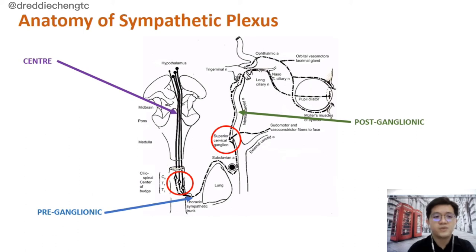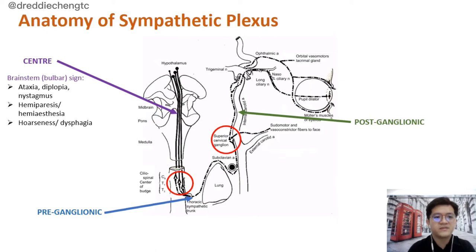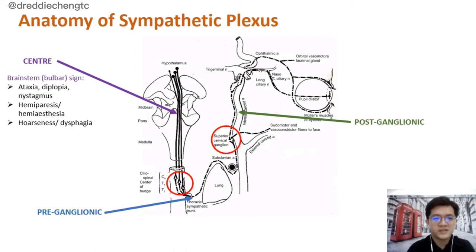In patients with Horner's Syndrome associated with brainstem signs including ataxia, diplopia, nystagmus, hemiparesis, hemianesthesia, or hoarseness of voice as well as dysphagia, which is a bulbar sign, we need to think of a brainstem lesion.